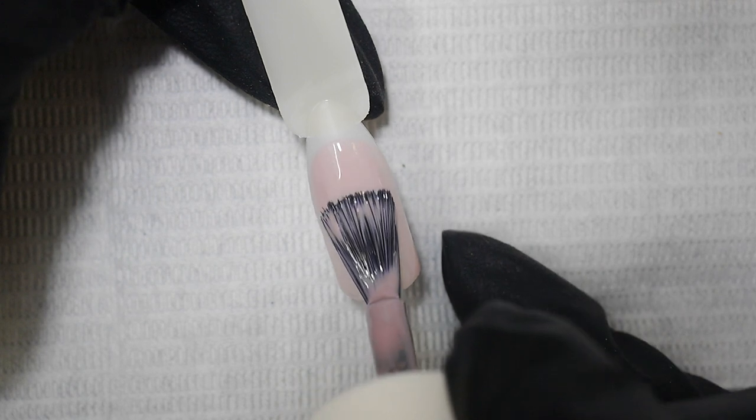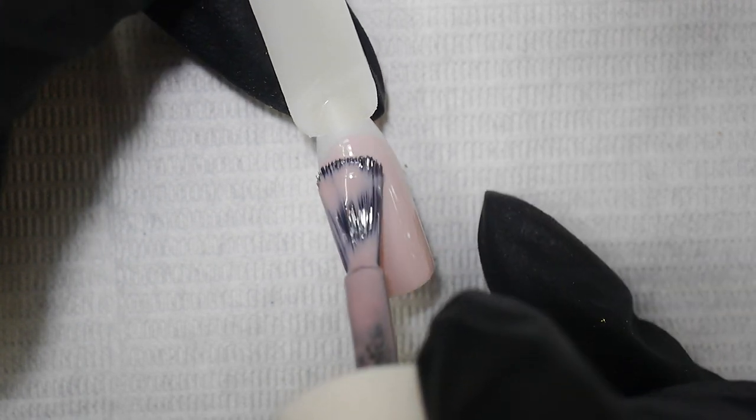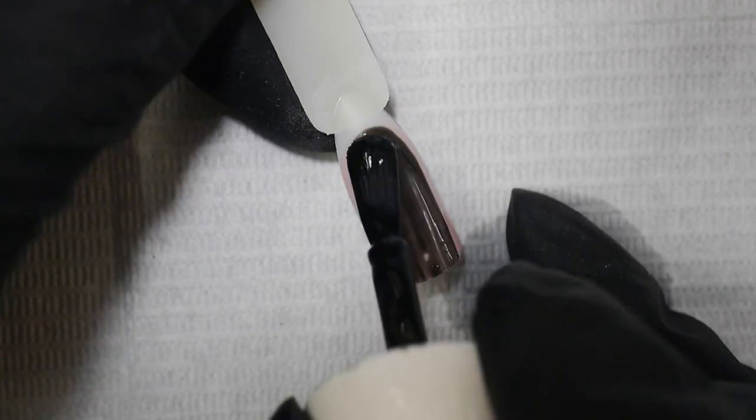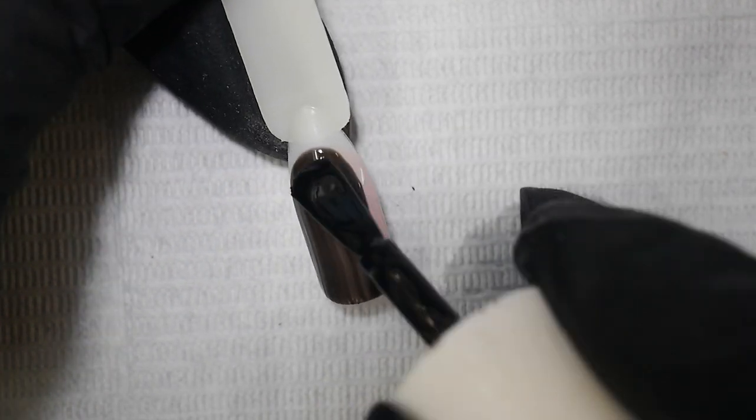I'm going to show you the bubble effect now using the gel polish color layers. I've applied two layers of a nude, mauve color, curing between each layer. Next, I'm applying a thin layer of a contrasting color, black in this case.